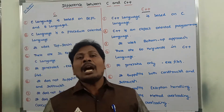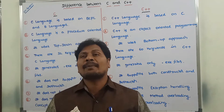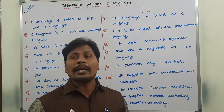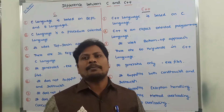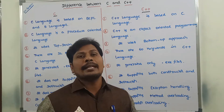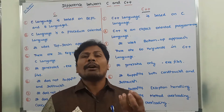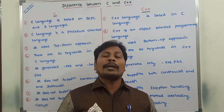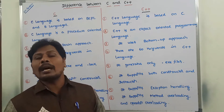C language does not support overloading. Whereas C++ language supports both method overloading and operator overloading. Overloading means the same method name can be used for different parameters — that is called method overloading. Operator overloading means one operator can be used for different purposes. So C++ supports both method overloading and operator overloading.